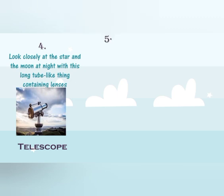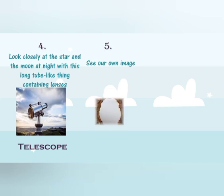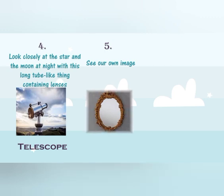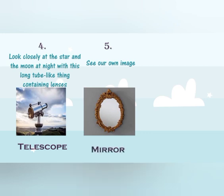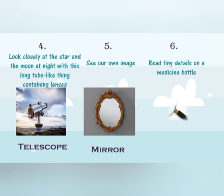Number five — see our own image. We see ourselves in a mirror. Sixth number — read tiny details on a medicine bottle. To read on a medicine bottle, we use this instrument. This is a magnifying glass.